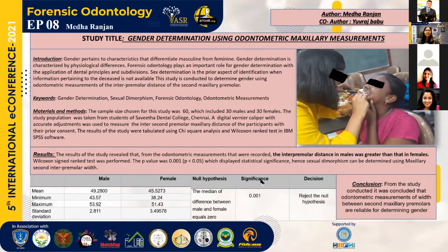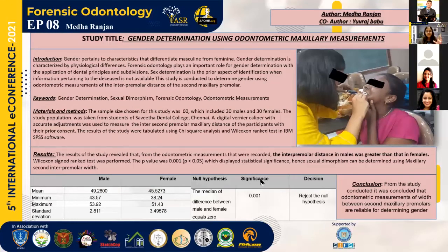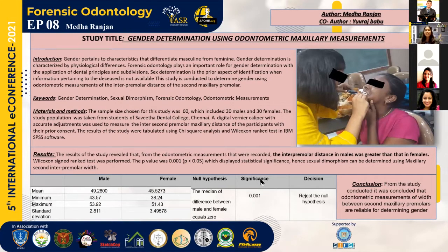Previously, gender determination was carried out using parameters such as the interacromial length, femoral length, and skull anthropometry. However, human teeth — because of their excellent inert chemical structure and physical strength — are best preserved during any mass disaster. This is where forensic odontology steps in with its excellent scope to identify the gender of the individual, which is why I have chosen the topic of gender determination using odontometric maxillary measurements using the second premolar.